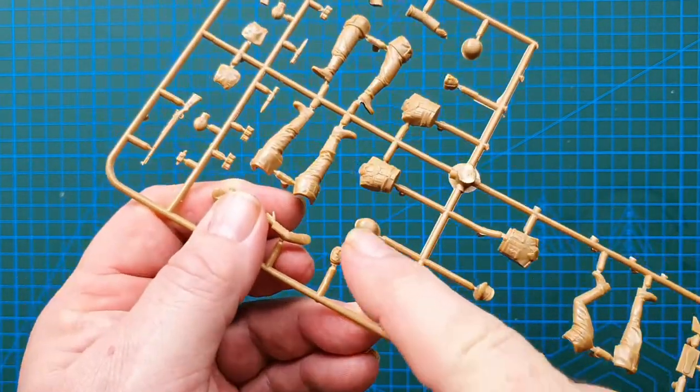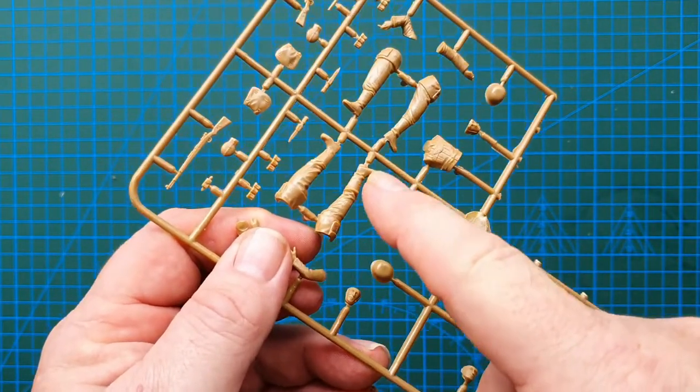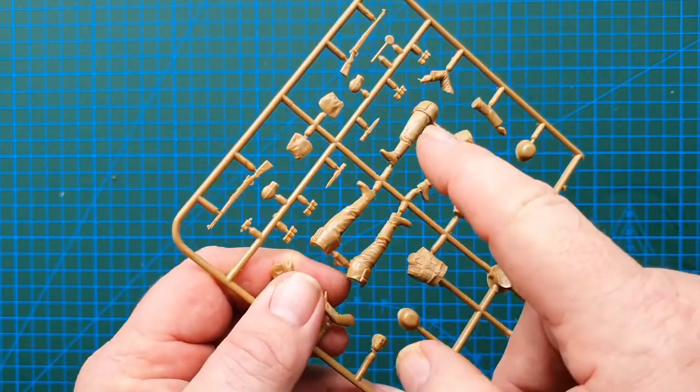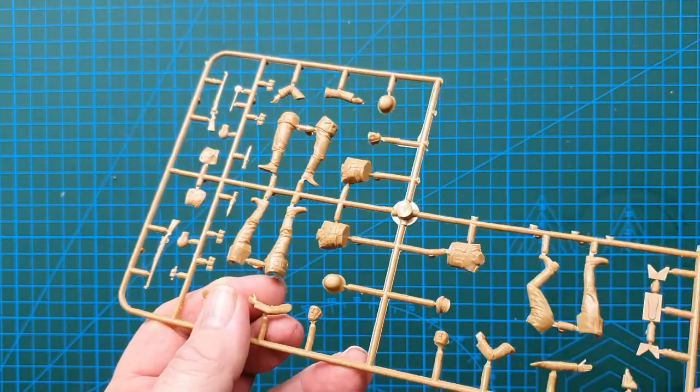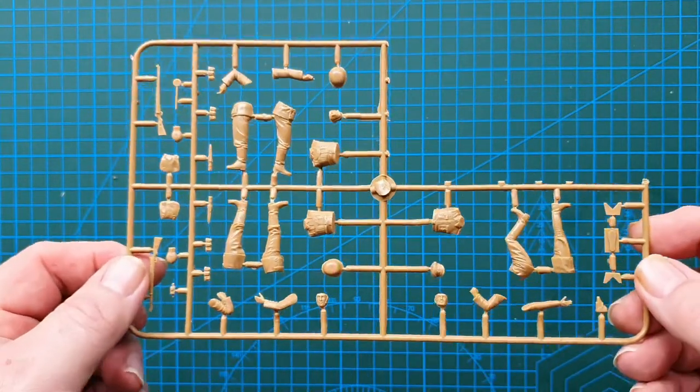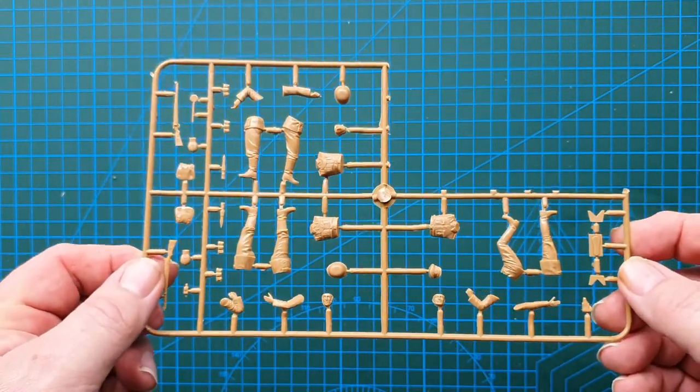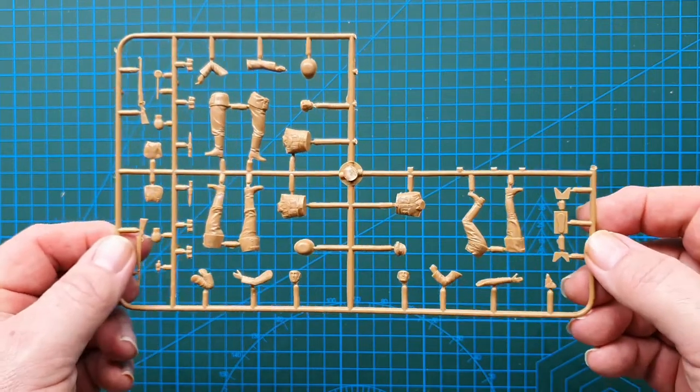There is a bit of flash around the heads, around the faces, and of course, you'll have mould lines on the figures. But apart from that, these are quite nice. So, that's the last figure. Give you some stills for this. And yeah. We'll carry on from there.